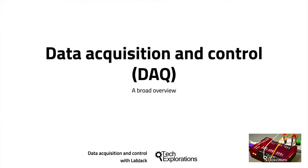Data acquisition and control technologies are very common in industrial settings such as factories and warehouses. Over the last 20 years, data acquisition and control have become a common part of our everyday experience. Modern cars are filled with computers and sensors collecting data and making decisions that control every aspect of engine and subsystem operations. And homes are also becoming automated using similar technologies.